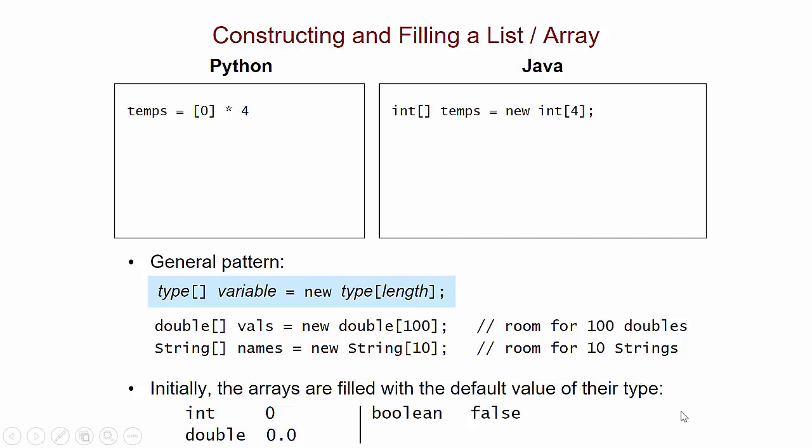For booleans, it's false is the default value. And for any object type, the special value null is what is used. So here, for example, I'm going to start out with an array filled with 10 nulls.